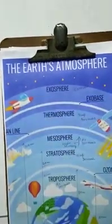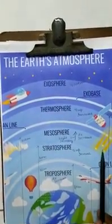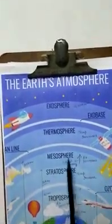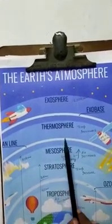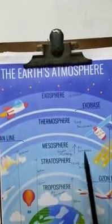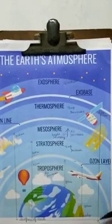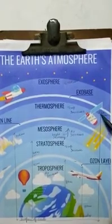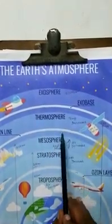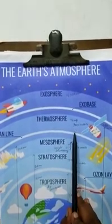So, in this layer, mesosphere, these meteors are very important. The fourth layer is thermosphere, just above the mesosphere. This layer extends up to a height of 450 km from the surface of the earth.